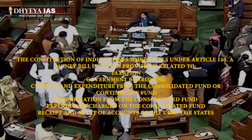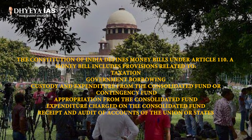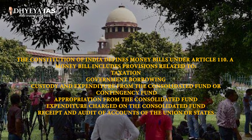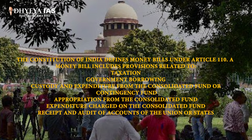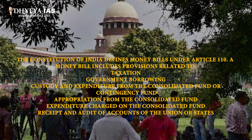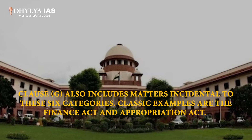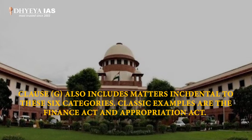A money bill includes provisions related to taxation, government borrowing, custody and expenditure from the Consolidated Fund or Contingency Fund, appropriation from the Consolidated Fund, expenditure charged on the Consolidated Fund, receipt and audit of accounts of the Union or States. Clause G also includes matters incidental to these six categories.